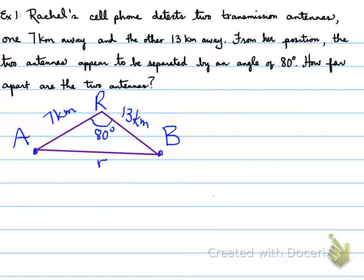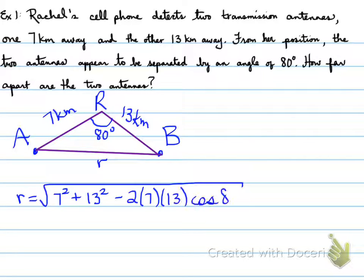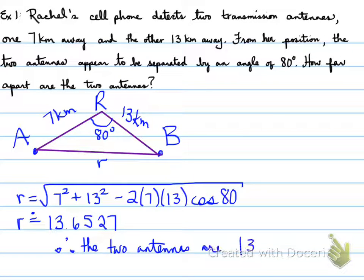Okay, one more time. We need little r, so we have two sides and a contained angle. That means that we have to use cosine law. And we're going to solve for little r. So instead of writing r squared equals, we automatically write r equals the square root, because we know we have to square root it. 7 squared plus 13 squared minus 2 times 7 times 13 cosine 80. We plug it in and we get 13.6527. Because we started with words, folks, we have to end with it. So therefore, the two antennas are 13.6527 kilometers apart.